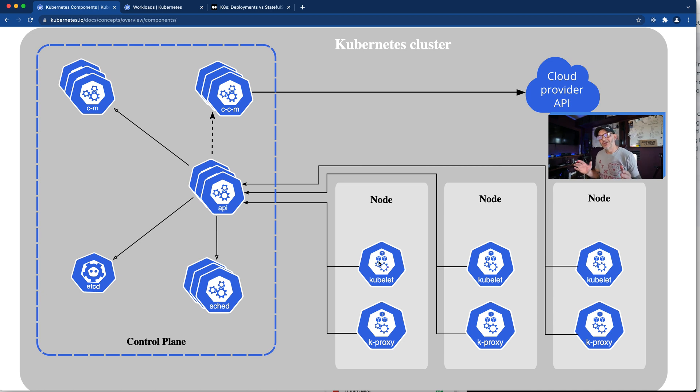Every node - which can be a physical server, a virtual machine, or an EC2 instance if you're using AWS - runs the kubelet application. The kubelet is the one that manages the containers in the pods. Basically, you've got a list of containers that are supposed to be running on the node. The kubelet will continuously probe those looking for your health checks and resource utilization, making sure they are in the state you've defined. If not, it will take some form of action to bring it back to that state.